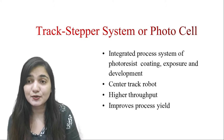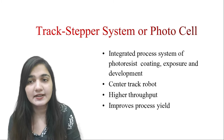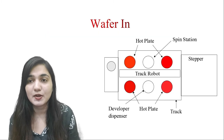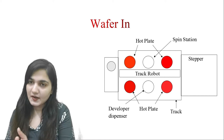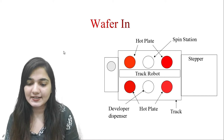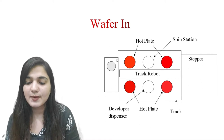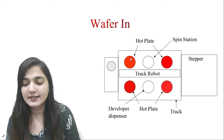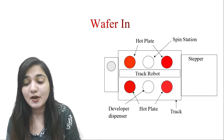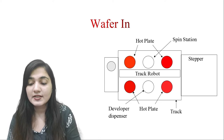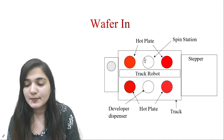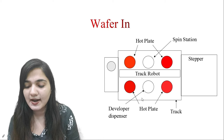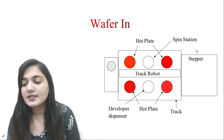Now you understand why it is important to understand the step tracker integrated system. The first step is to provide the wafer inside the system. The wafer moves inside to this hot plate — the red plates represent the hot plates. This is the spin station, this is the developer dispenser, and this is the stepper.